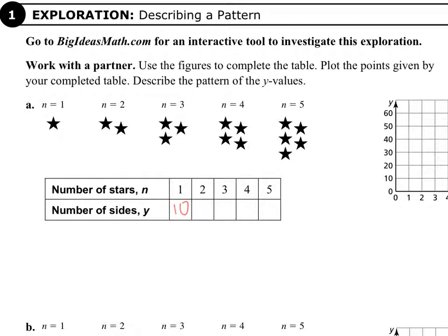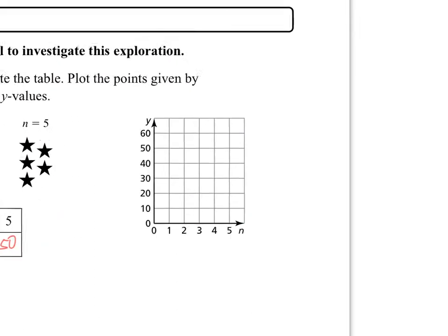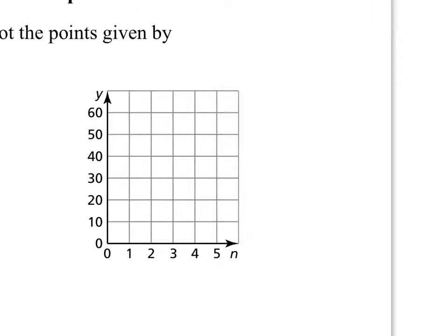Hopefully you counted up all those patterns and graphed them. We should get something like this: ten, twenty, thirty, forty, fifty is the total number of sides, because each star has ten sides. Graphing those points — the first number was ten, second is twenty, next is thirty, forty, the fifth one is fifty, the sixth one would be sixty. We're not going to connect them with a line, but you can see they make a nice straight line like our linear patterns.